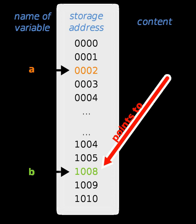In the C# programming language, pointers are supported only under certain conditions. Any block of code including pointers must be marked with the unsafe keyword. Such blocks usually require higher security permissions to be allowed to run. The syntax is essentially the same as in C++, and the address pointed can be either managed or unmanaged memory. However, pointers to managed memory — any pointer to a managed object — must be declared using the fixed keyword, which prevents the garbage collector from moving the pointed object as part of memory management while the pointer is in scope, thus keeping the pointer address valid. An exception to this is using the IntPtr structure, which is a safe managed equivalent to int*, and does not require unsafe code.